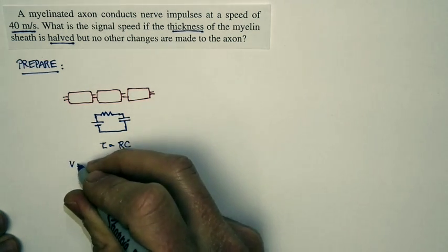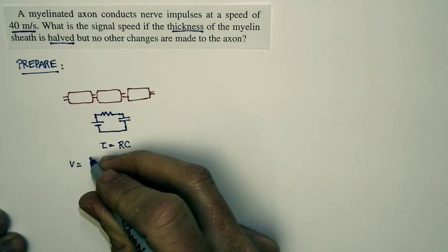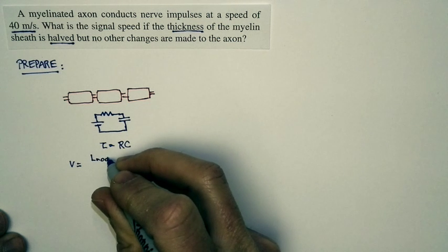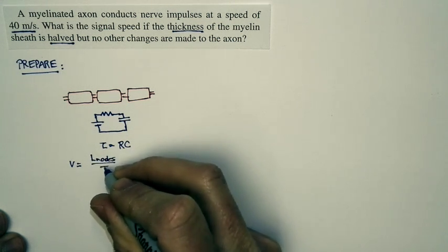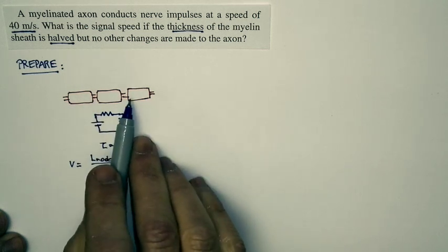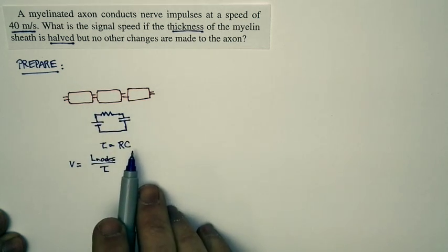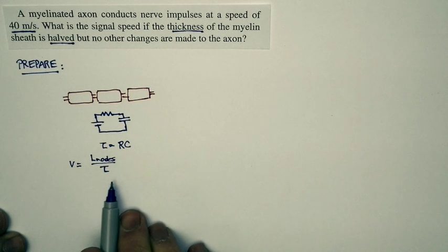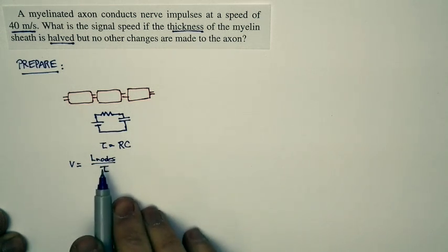Well, the conduction speed is equal to the distance between successive nodes divided by the time constant. That makes sense. How far does the signal have to move? The distance between nodes. How much time does it take? We're going to assume it's basically the time constant. And so this is our conduction speed.